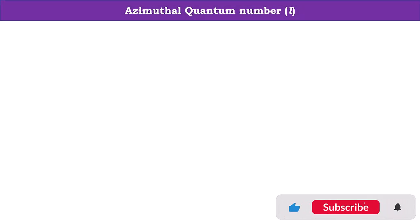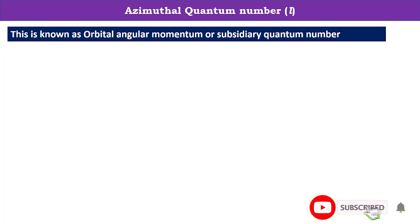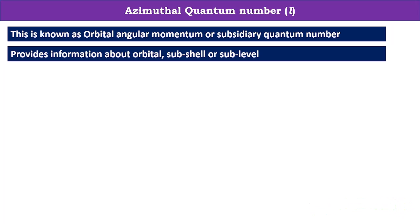Hello friends, in this video we are going to learn about the azimuthal quantum number. This quantum number is also known as the orbital angular momentum or subsidiary quantum number. It provides information about orbitals and also represents a subshell or sublevel.